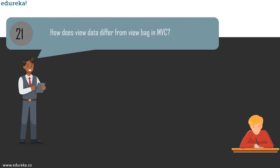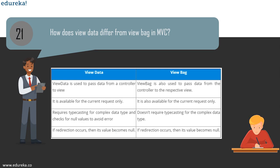The next question is: how does ViewData differ from ViewBag in MVC? ViewData is used to pass data from a controller back to the respective view, and is available for the current request only. ViewBag is also available for the current request only. ViewData requires typecasting for complex data types and checks for null values to avoid errors, but ViewBag does not require typecasting for complex data types. If a redirection occurs, the value becomes null in both ViewData and ViewBag.